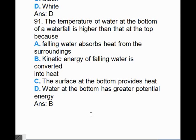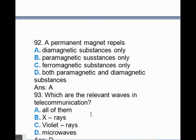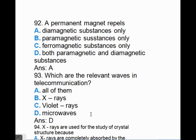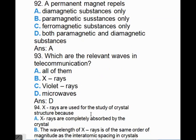The temperature of water at the bottom of a waterfall is higher than that at the top because, answer is B, kinetic energy of falling water is converted into heat. A permanent magnet repels, answer A, diamagnetic substances only. Which of the following waves is used in telecommunication? Answer is D, microwaves.